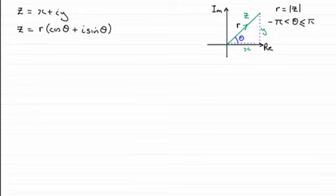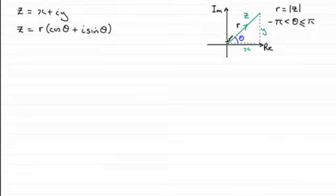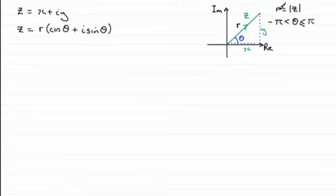Hi, welcome to another video in my series on complex numbers. In the past I've shown you that if we take a complex number Z, it can be expressed in terms of its real part and its imaginary part X and IY. We've got a sketch here on an Argand diagram of the complex number Z. If we took the modulus of Z, it represents the length of Z and that was given by R. The angle theta was the argument of the complex number Z, and it had to be an angle between minus pi radians and less than or equal to pi radians.